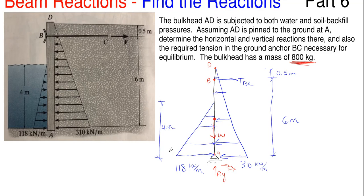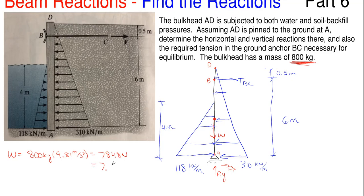First, we need to get the weight of the bulkhead to finish the free body diagram. That's our mass of 800 kilograms multiplied by the acceleration of gravity, 9.81 meters per second squared, giving us 7848 newtons, which converts to 7.848 kilonewtons. That is the weight acting downward. Now the free body diagram is complete and we need to find T_BC, A_y, and A_x.